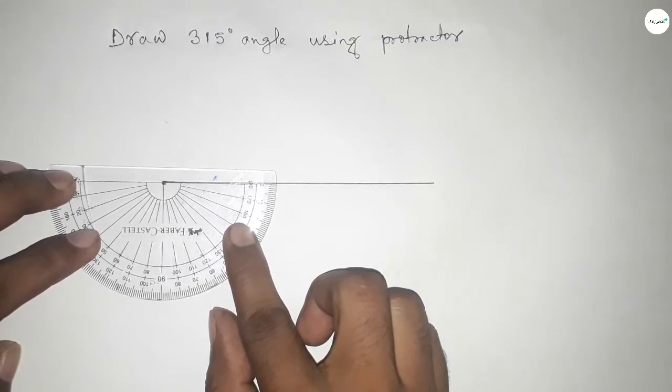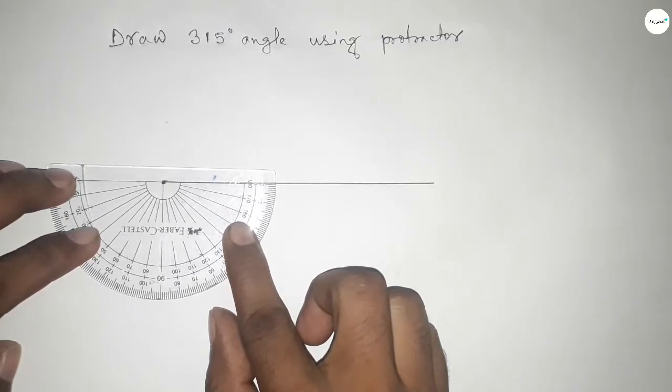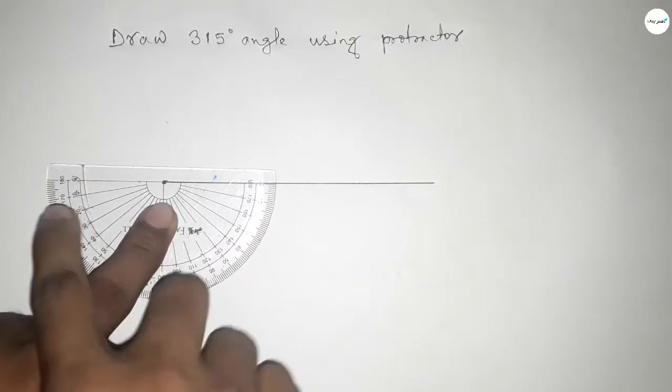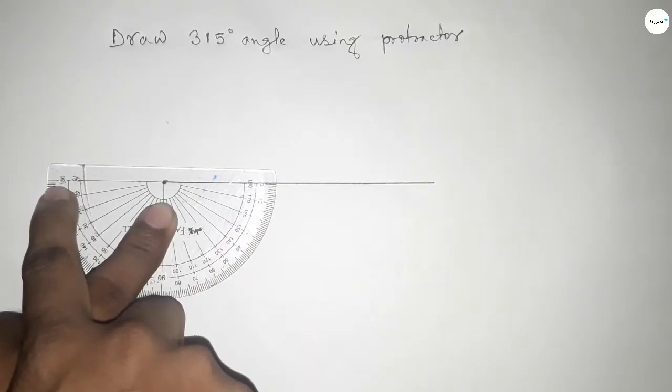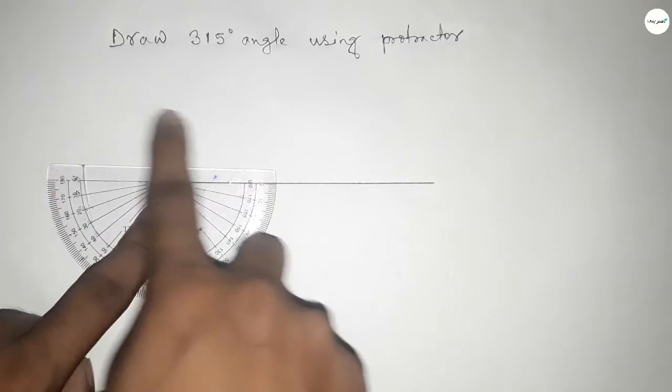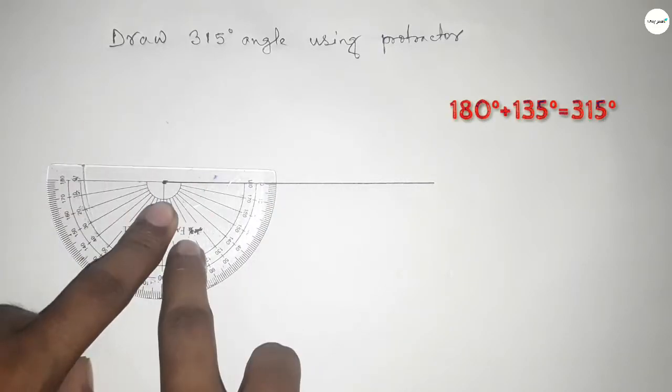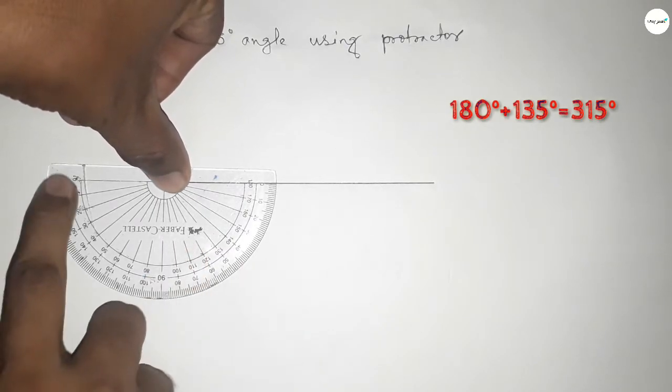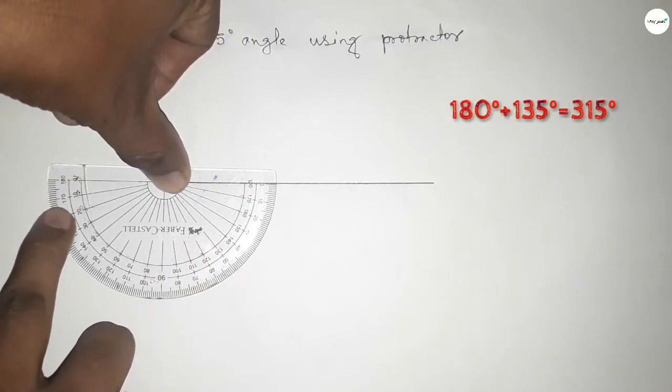Now counting the angle. This is up to 180 degrees. This is 180 degrees, but we have to draw a 315-degree angle. So if you add, this is 10,